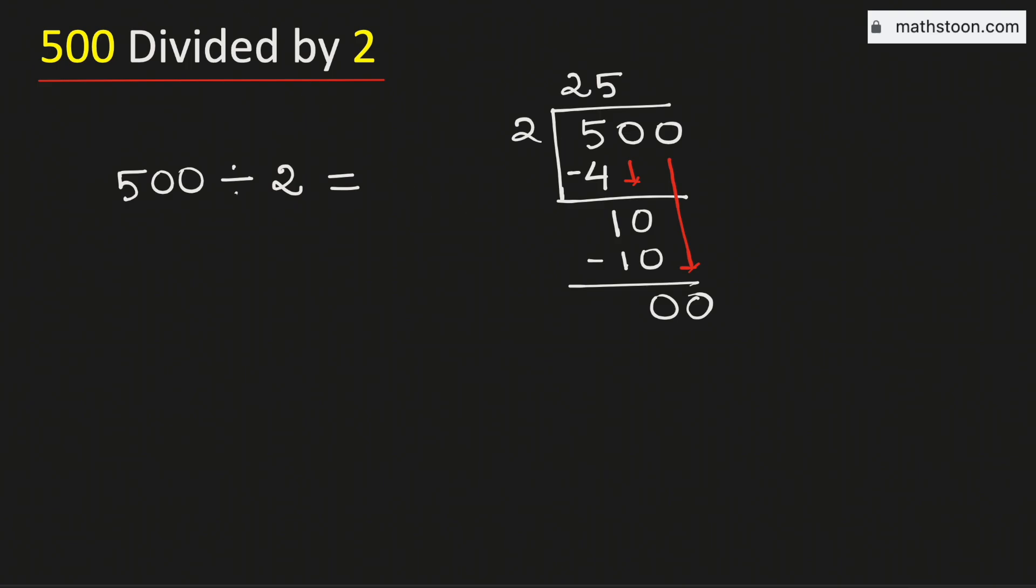Now see that this is the number 0. So we will remove one 0. Now 2 times 0 is 0. Subtract, we get 0. As we have no number to bring down here, so we will stop.